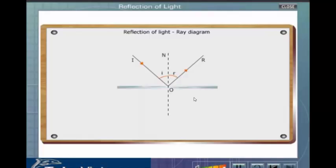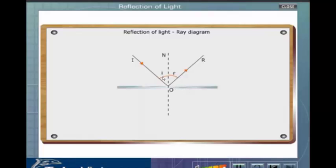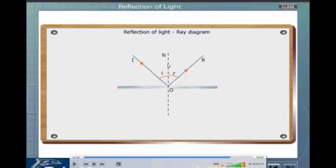And in regular reflection, in other words, if this is a nice shiny object like a mirror or piece of glass, then the angle of incidence is always going to equal the angle of reflection. And this line here is called a normal, and the normal is always 90 degrees to the surface.